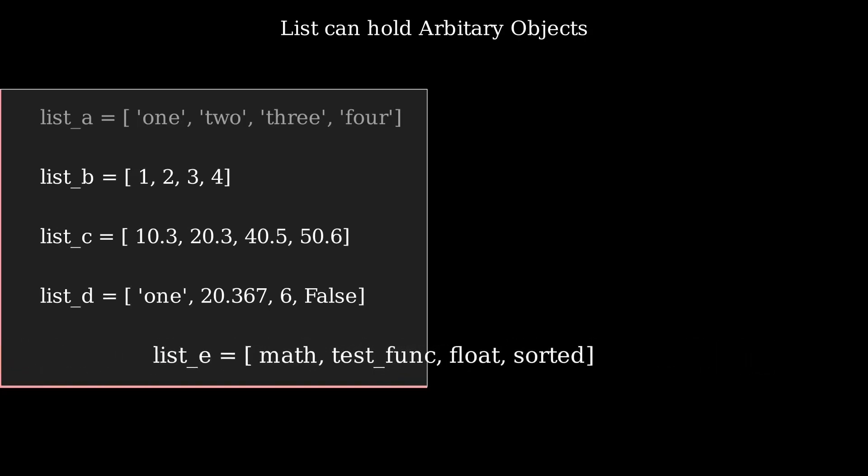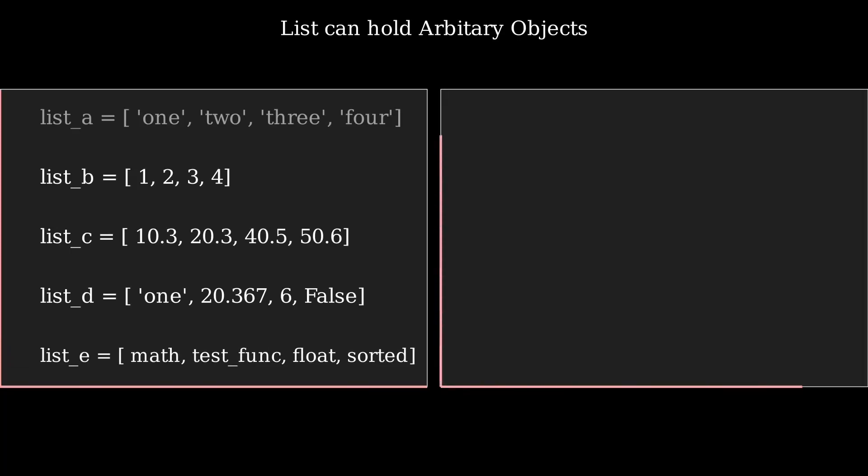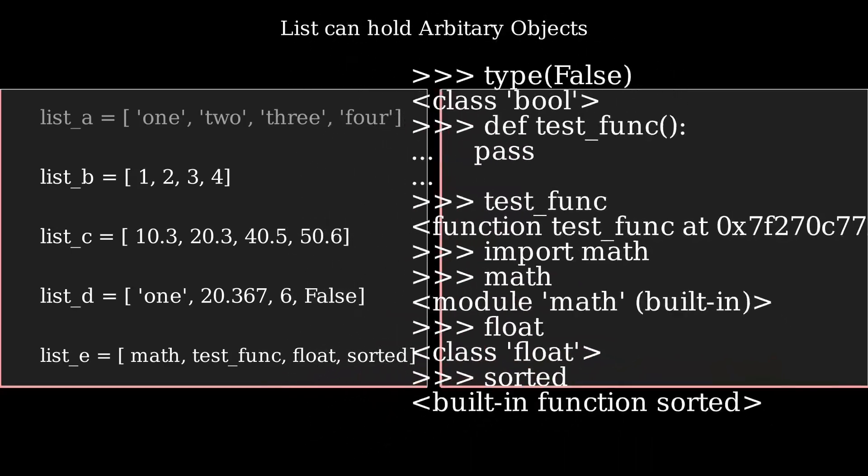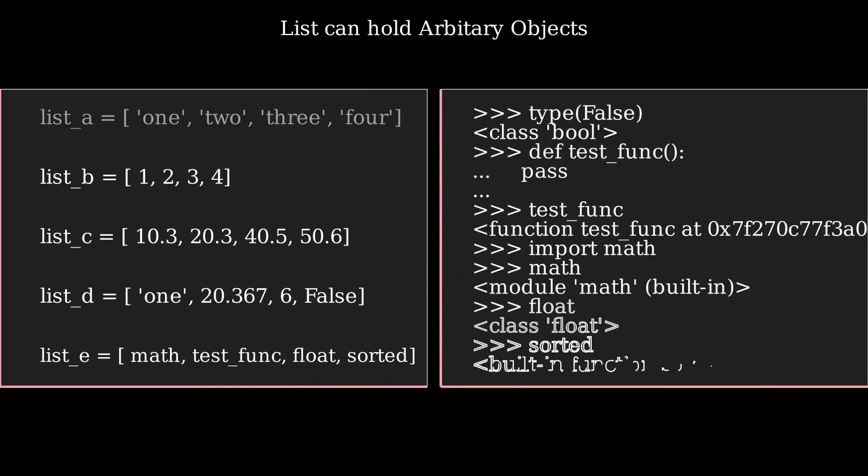Lists can also contain complex objects like functions, modules, and classes. To add the math module as an element in list_e variable, you have to first import the math module. Similarly, you have to first define the test_func method to use it in list_e variable. You can use built-in methods like sorted and float without any imports or defining a function.